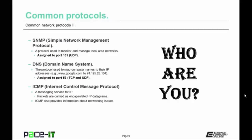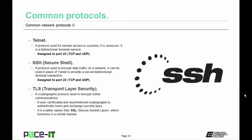Then there's DNS — Domain Name System — the protocol used to map computer names to their IP addresses, assigned to port 53 and using TCP or UDP. Then we have ICMP — Internet Control Message Protocol — a messaging service for internet protocol. ICMP packets are carried as encapsulated IP datagrams, and ICMP also provides information about networking issues. ICMP is not assigned to a default port, but it is still a common protocol. Telnet is a protocol used for remote access to systems — it is unsecure but a handy bi-directional terminal service, assigned to port 23 and using TCP and UDP.